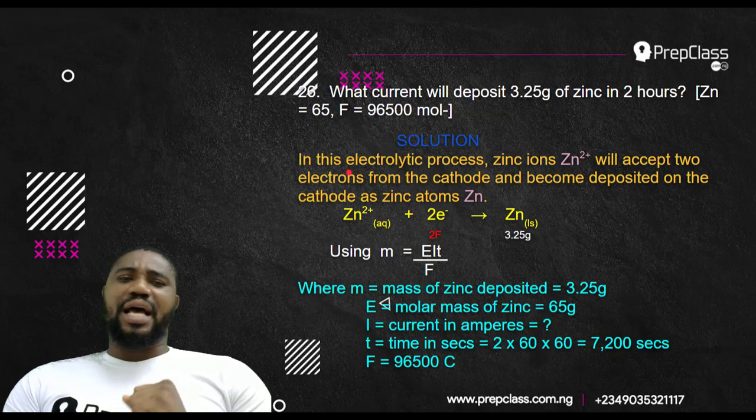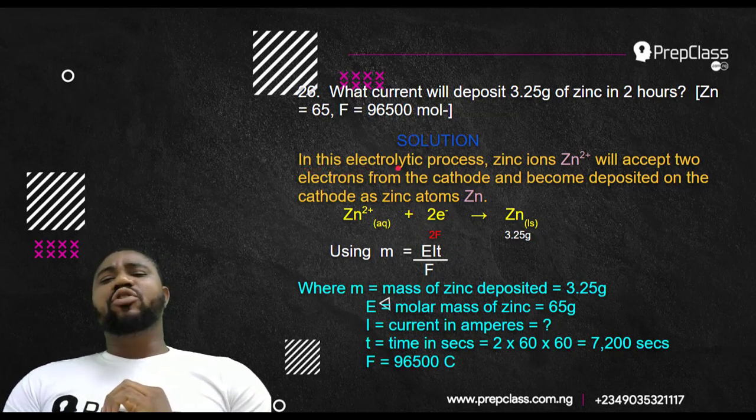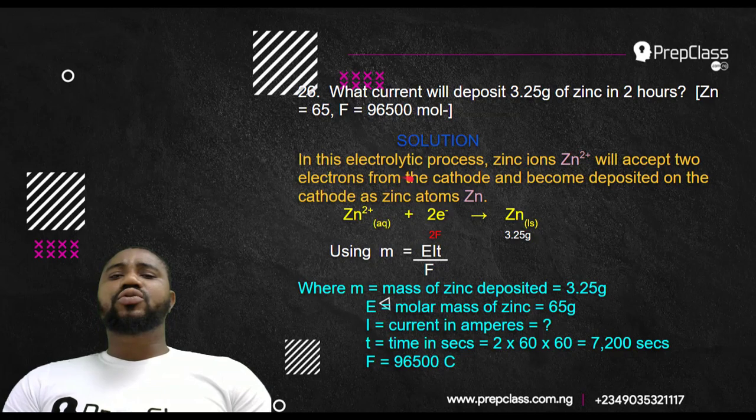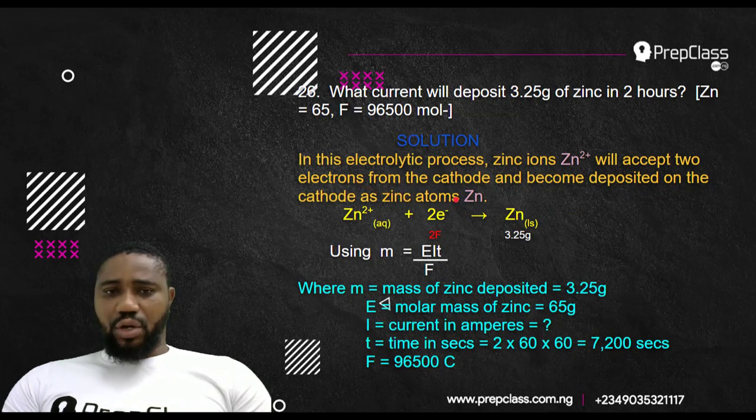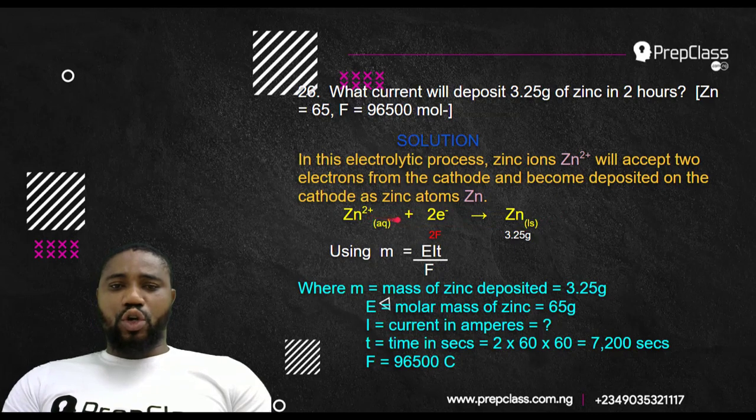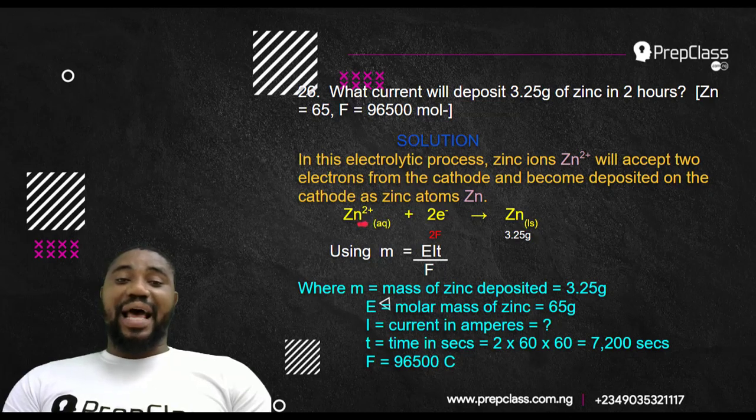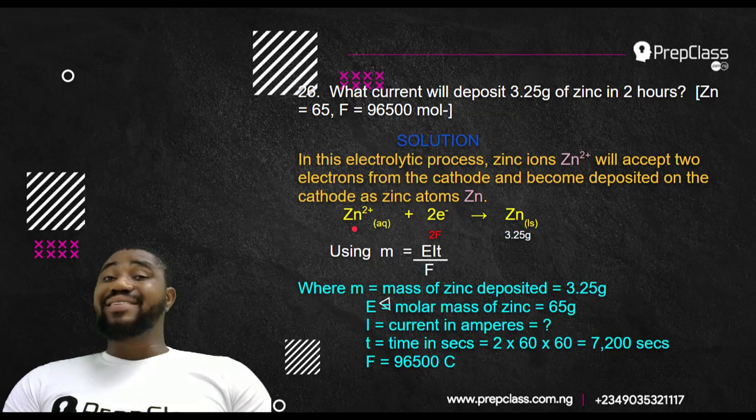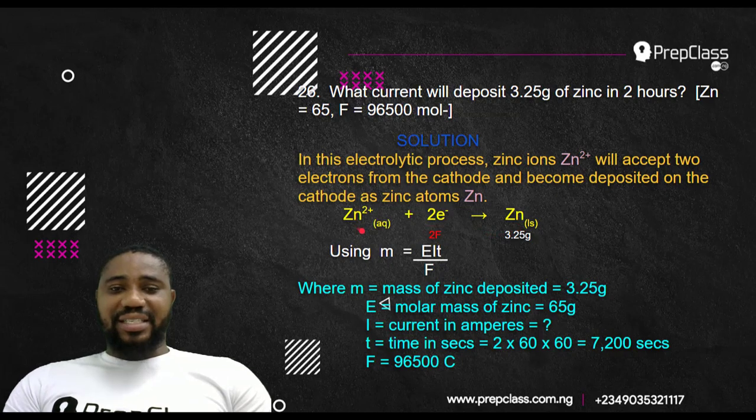Before we go into that formula, let me explain. In this electrolytic process, zinc ions Zn2+ will accept two electrons from the cathode and become deposited on the cathode as zinc atoms. You can see the equation of reaction here. In electrolysis, the cations, the positive ions are attracted towards the negative electrode. The cathode is the negative electrode. The anode is the positive electrode.